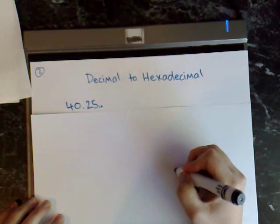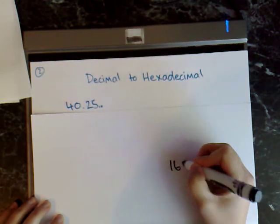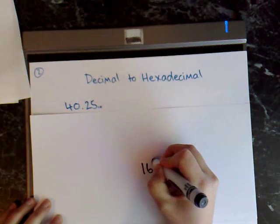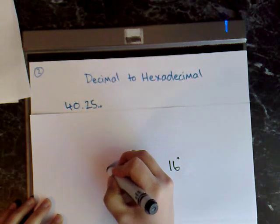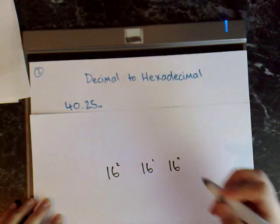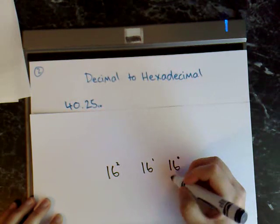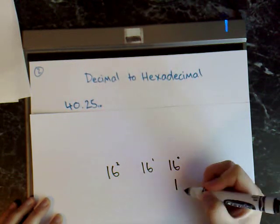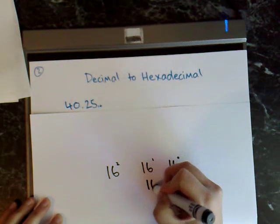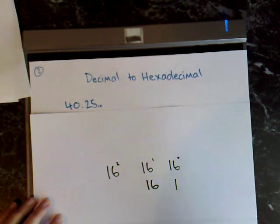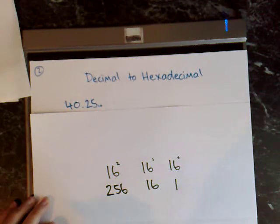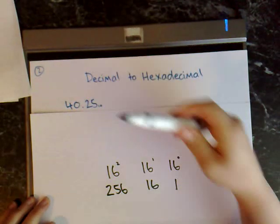The first step is to list the powers: 16 to the power of 0, 16 to the power of 1, and 16 to the power of 2. Working these out: 16 to the power of 0 equals 1, 16 to the power of 1 equals 16, and 16 to the power of 2 equals 256. We don't need to go further because 256 is larger than 40.